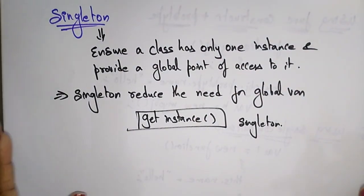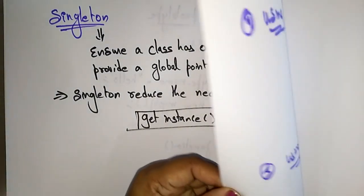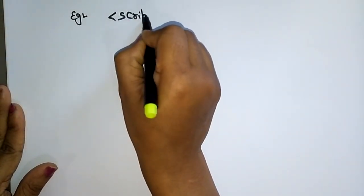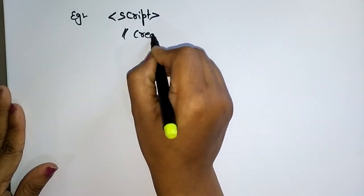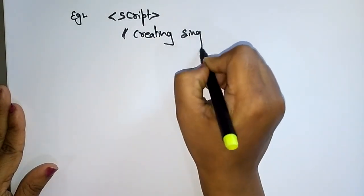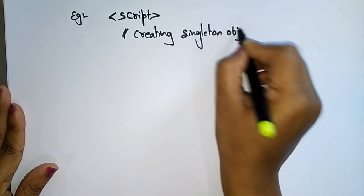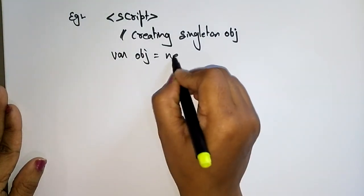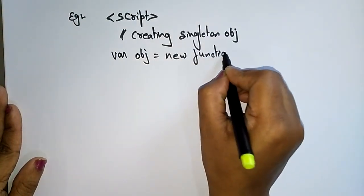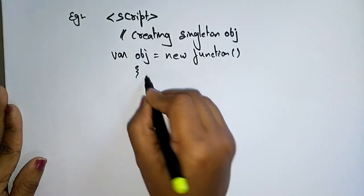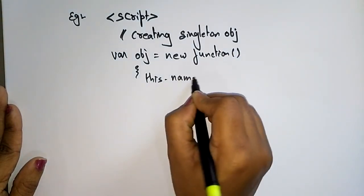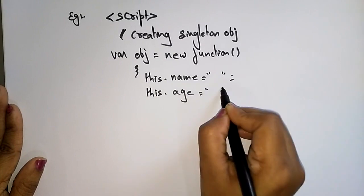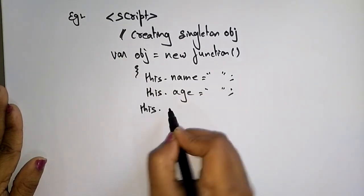Let me explain with a simple example. Inside a script, I'll create a Singleton object. The variable 'object' is assigned using 'new function', and inside I set 'this.name' and 'this.age' as properties.